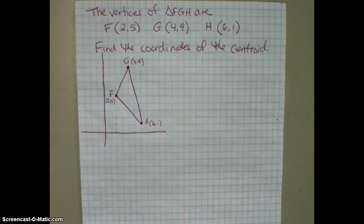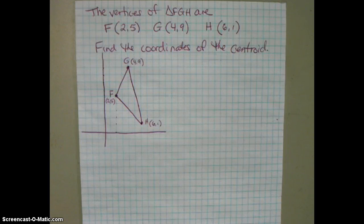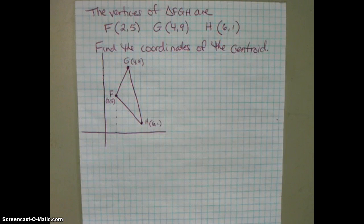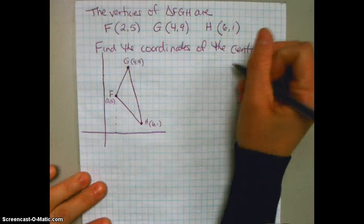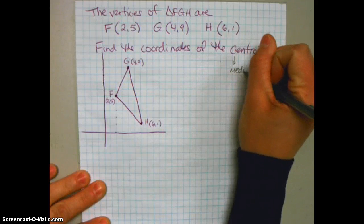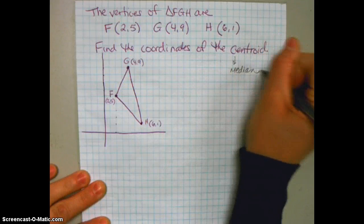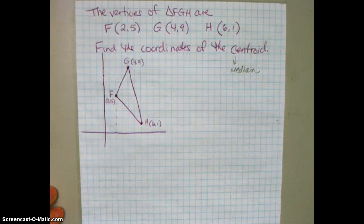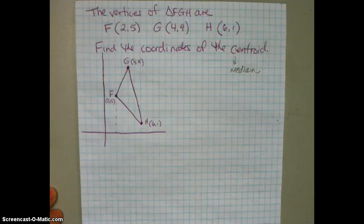I have my little plot here. I sketch the graph to see what exactly the triangle looks like. Now when you see the word centroid, you should think of what? Medians, right? So the centroid is the point of concurrency between the medians.